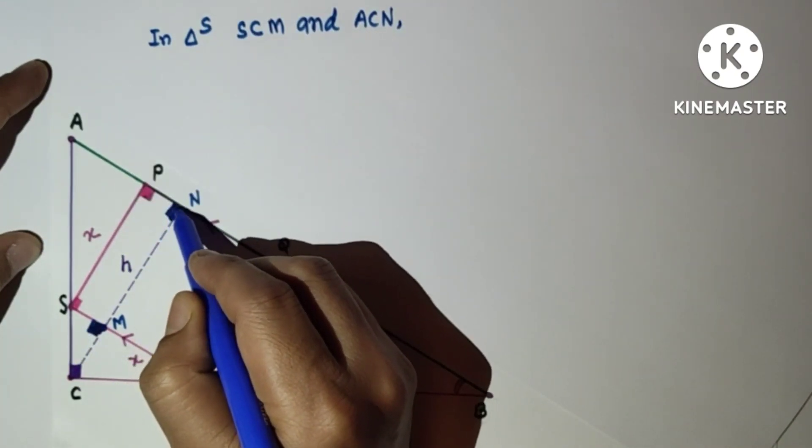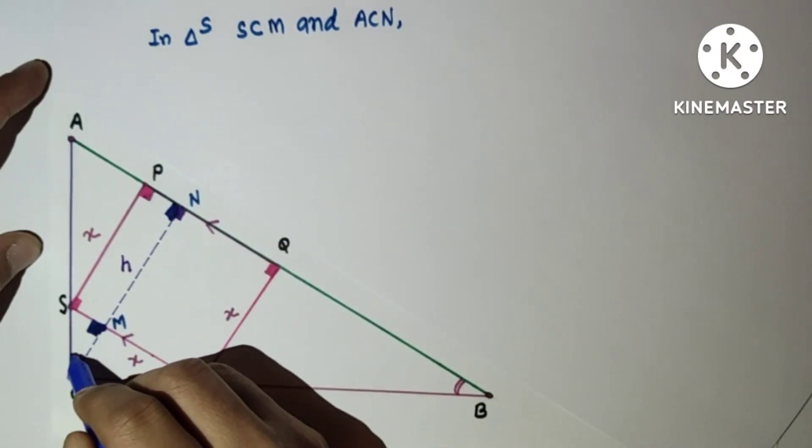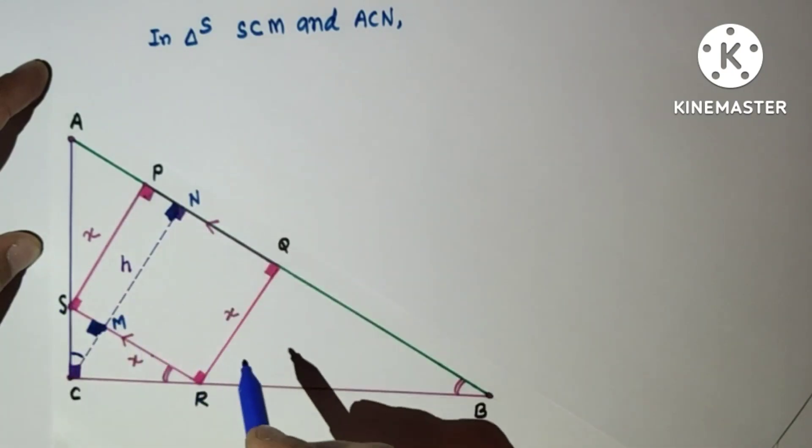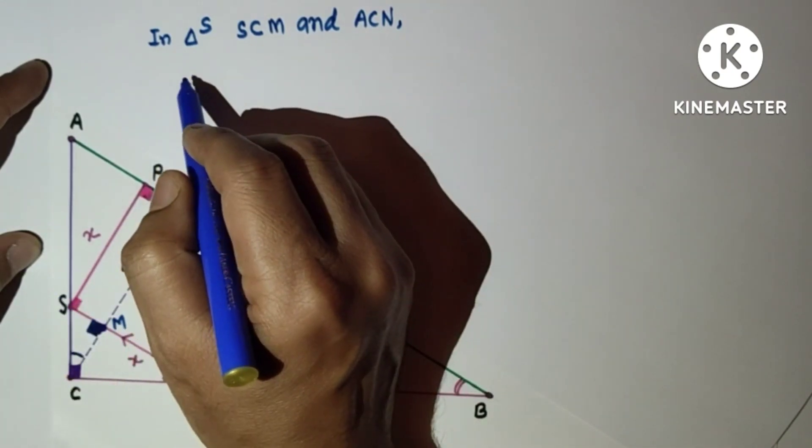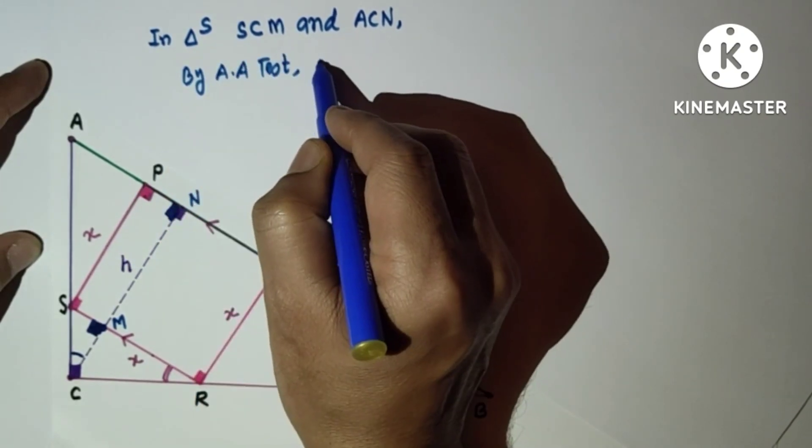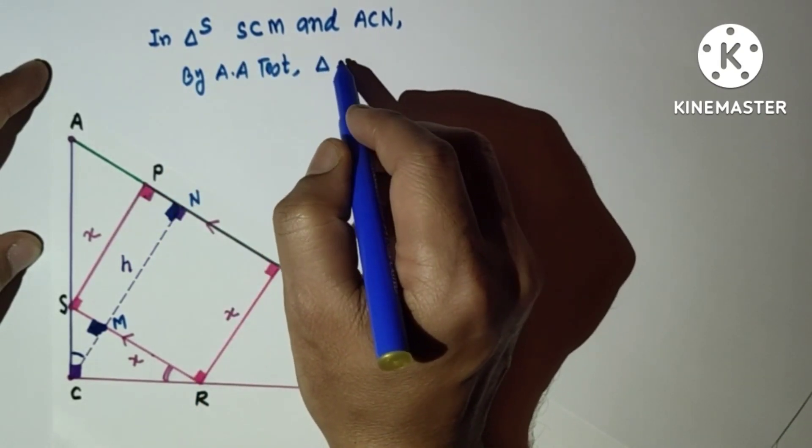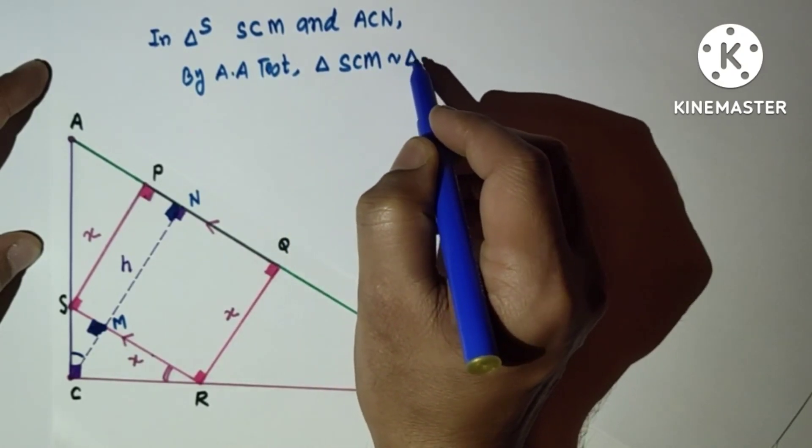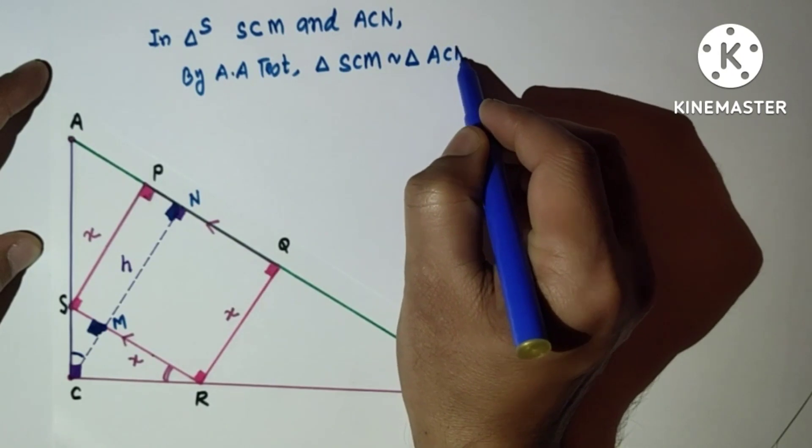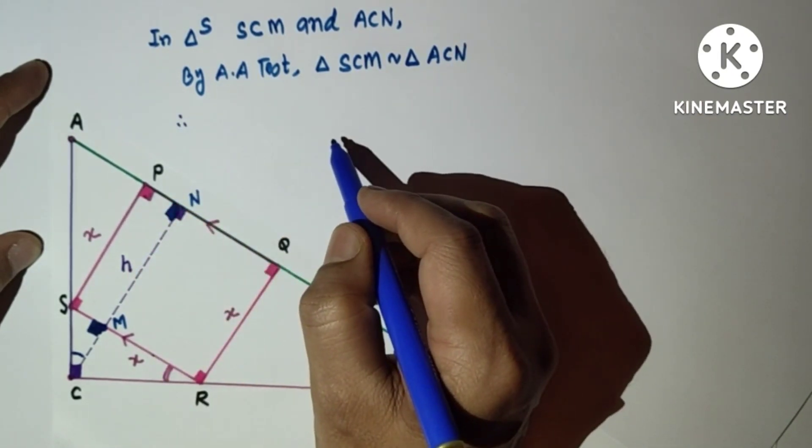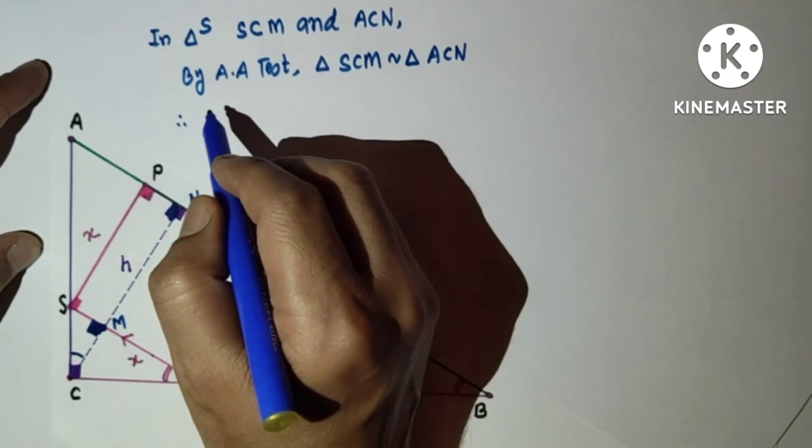By the AA test of similarity, triangle SCM is similar to triangle ACN. Therefore, corresponding sides are proportional, so we can say that SC/AC = CM/CN. This is result 1.